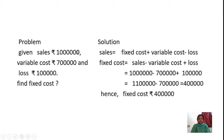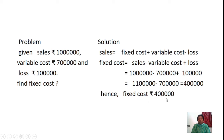Applying the values: 10,000 minus Variable Cost 7,000 plus Loss 1,000. First, adding the positive figures: 10,000 plus 1,000 equals 11,000. Then deducting 7,000: 11,000 minus 7,000 equals 4,000. Hence, the fixed cost is Rs. 4,000.